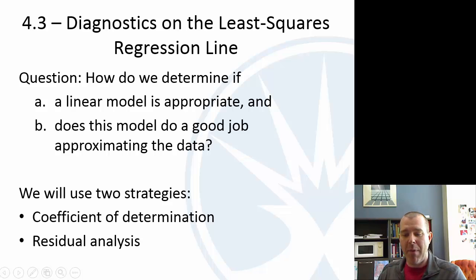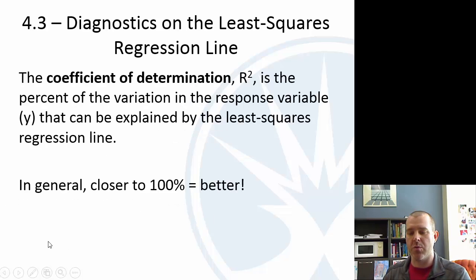So again, the basic question here is, is a linear model appropriate and does it do a good job approximating the data? We're going to have another statistic called the coefficient of determination and then we're also going to analyze residuals. The coefficient of determination, it's a percentage and it's the percent of the variation in your response variable, like the compass algebra score, it's the percent that's explained by this line. So the higher that percentage, the better. The closer to 100%, the better that model is.